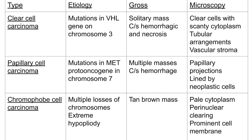In summary: clear cell carcinoma has mutations in the VHL gene on chromosome 3; papillary has mutations in the MET gene on chromosome 7; and chromophobe has multiple chromosomal losses causing extreme hypoploidy. Grossly, clear cell presents as a solitary mass, papillary as multiple masses, and chromophobe as a tan-brown mass. Microscopically, clear cell shows absent cytoplasm with cells in tubules and some granular eosinophilic cells; papillary shows papillary projections lined by neoplastic cells; and chromophobe shows pale cytoplasm, perinuclear clearing, and prominent cell membrane.